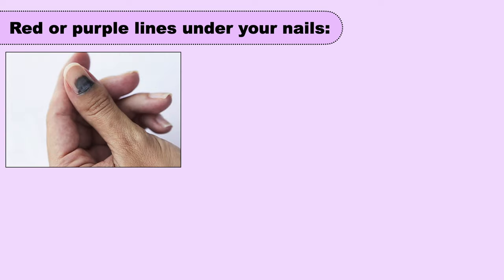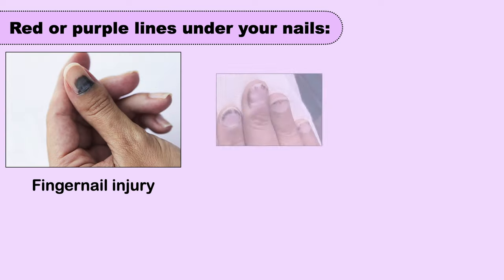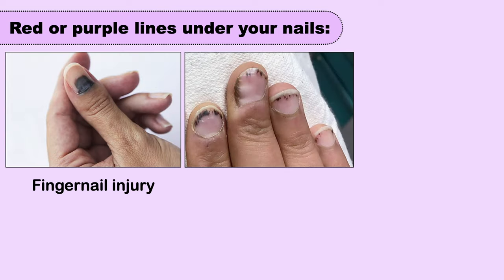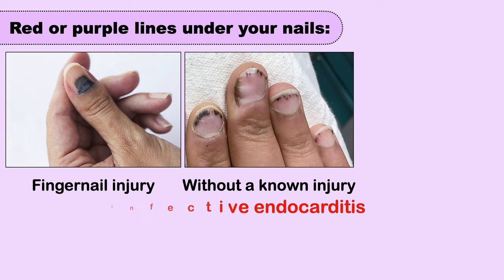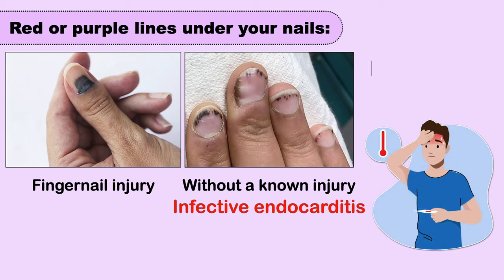Red or purple dots of blood under the fingernails are usually caused by a fingernail injury or abrasion. But if they appear without a known injury, they may be a sign of heart disease or a heart infection called infective endocarditis.